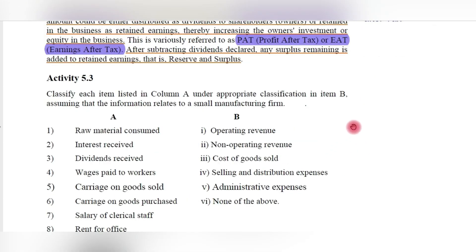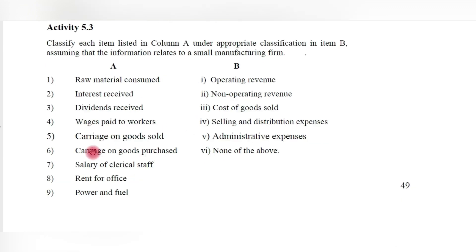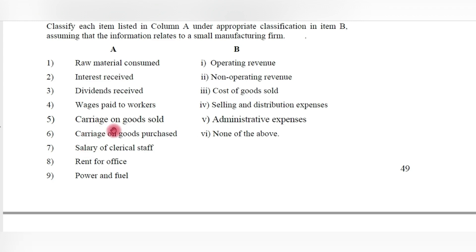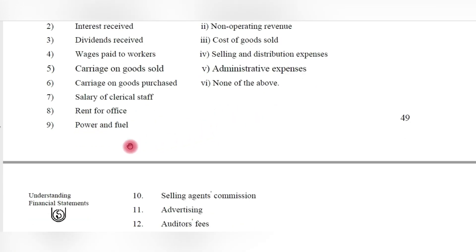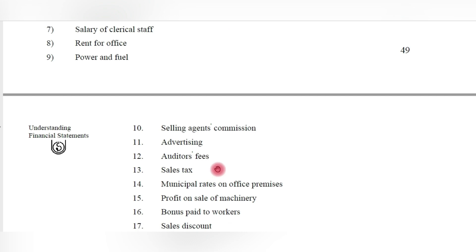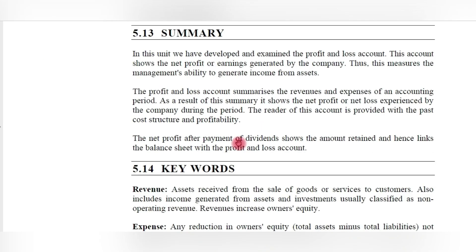We have completed this chapter on construction and analysis of a profit and loss account. There is an activity to match items: raw material consumed is an expense; depreciation is for expired asset cost; interest received is non-operating revenue; dividends received is non-operating revenue; wages paid to workers is an administrative expense; carriage on goods sold and carriage on goods purchased are distribution expenses; salary of clerical staff, rent for office, and miscellaneous expenses are administrative expenses; power and fuel, selling agents' commission, advertising, and auditor fees are other expenses.